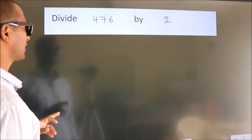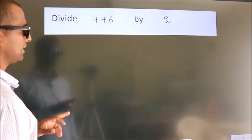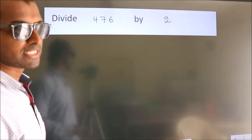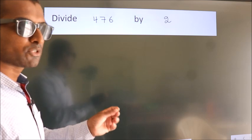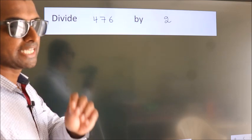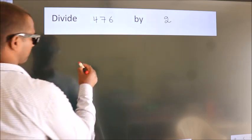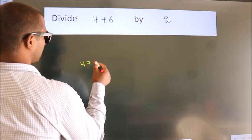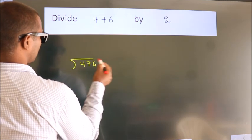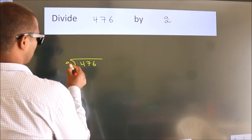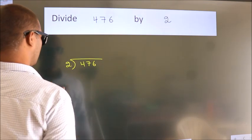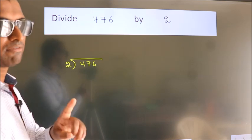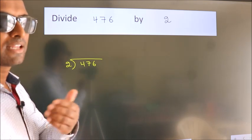Divide 476 by 2. To do this division, we should frame it in this way: 476 here, 2 here. This is your step 1.